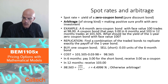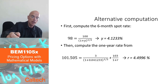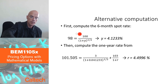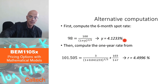Now let me show a slightly easier way to get the same result for this particular example. First, compute the annualized six-month spot rate: the six-month zero coupon bond trades for $98, so using the present value formula with exponent one-half (for six months with annual compounding), the six-month spot rate is approximately 4.123%.